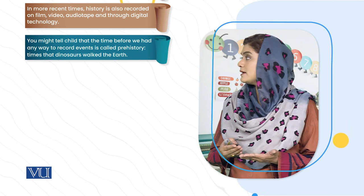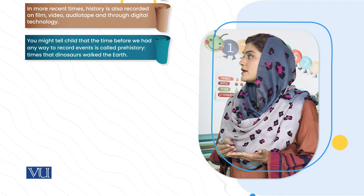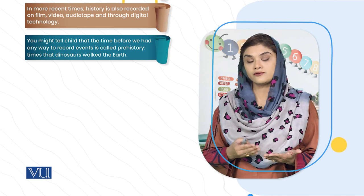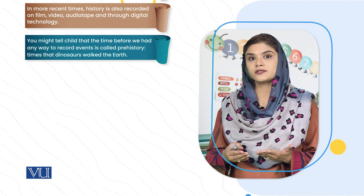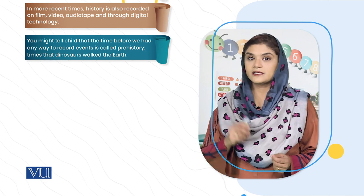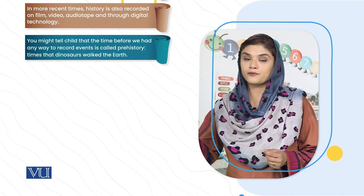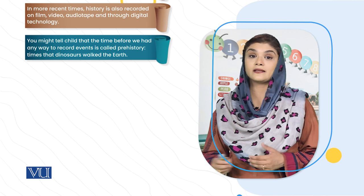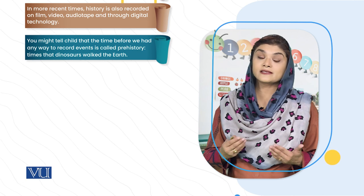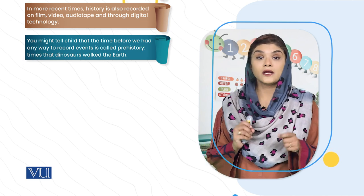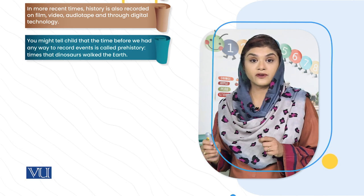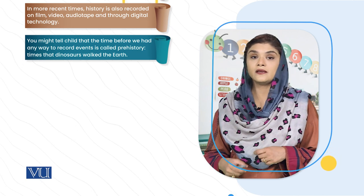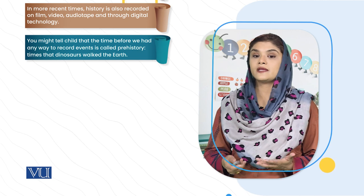How was history recorded? History was conveyed through painting. There were wall paintings, handwritings that developed over time, stone and pen engravings — it was written in many different ways.